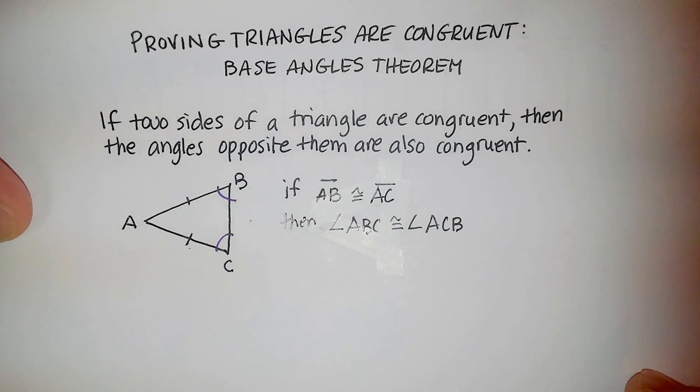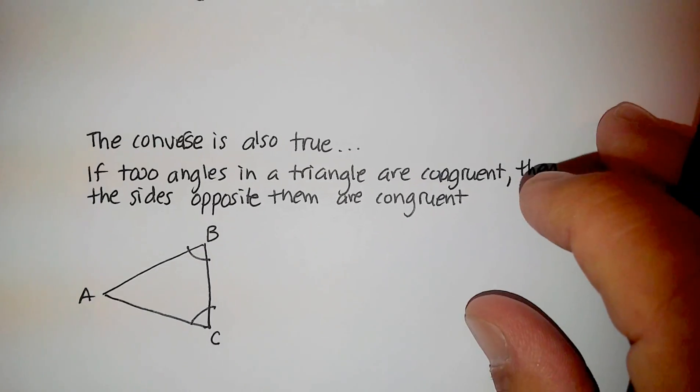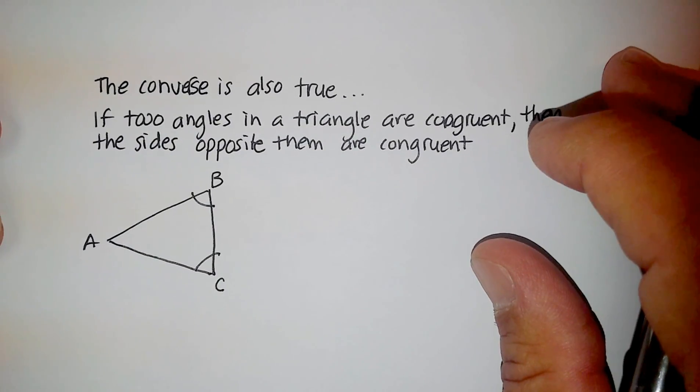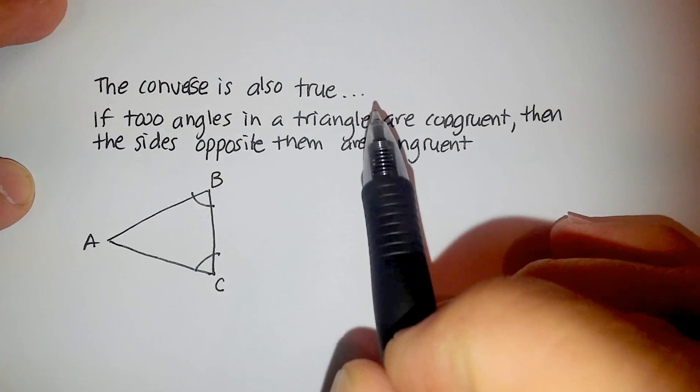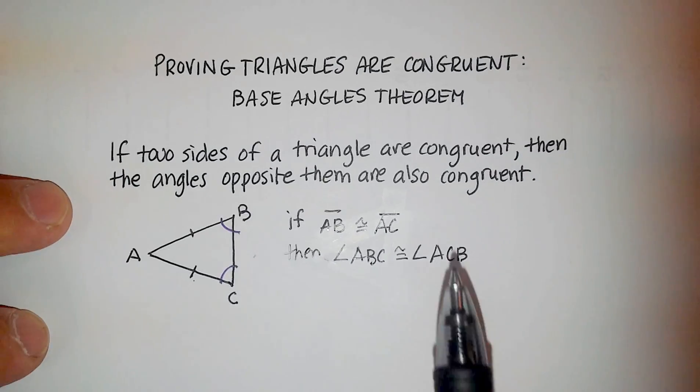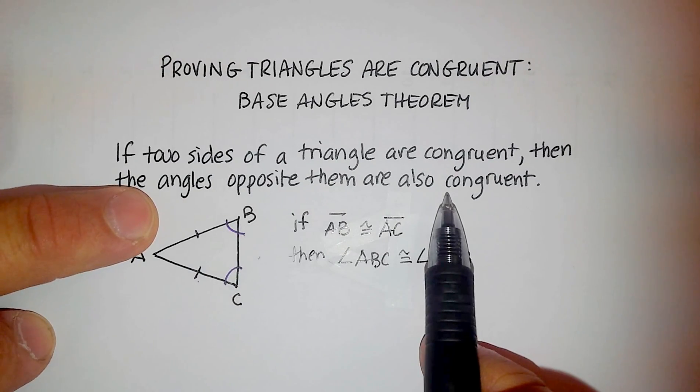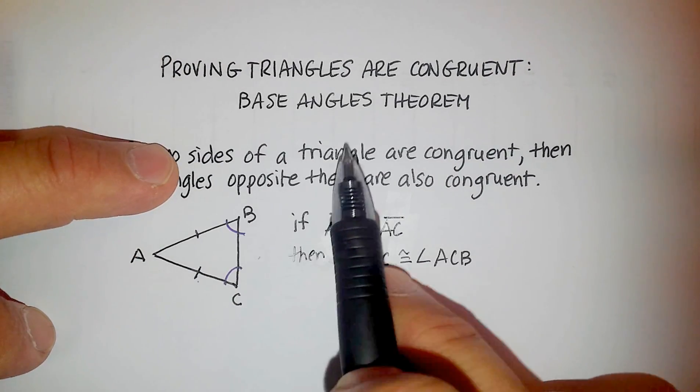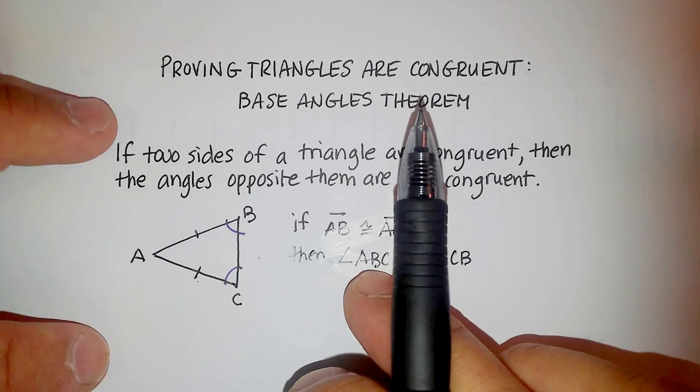There's also a converse here. And basically, remember what a converse is that you basically flip the statements. So instead of up here, you would say, if the angles are congruent, then the sides would be congruent. So you're just doing the exact opposite here.